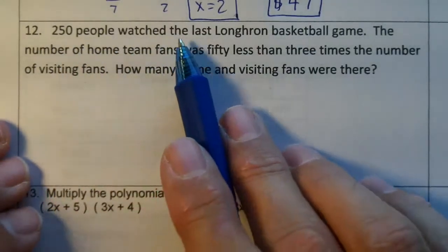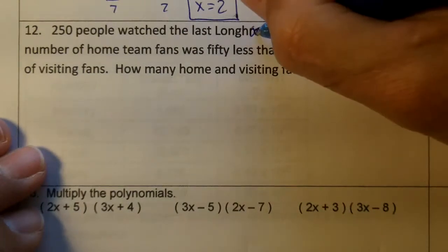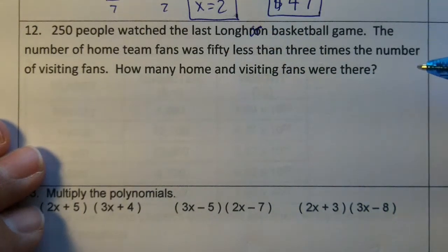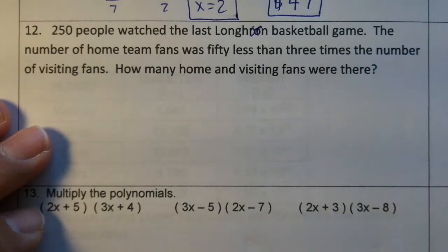Number 12. 250 people watched the last Longhorn basketball game. The number of home team fans was 50 less than three times the number of visiting fans. How many home and visiting fans were there?